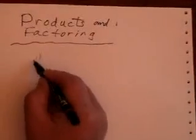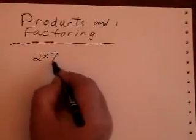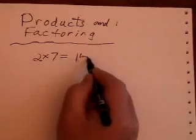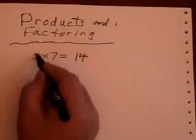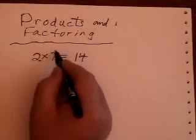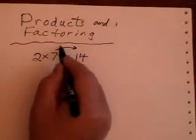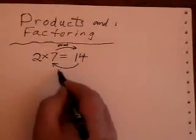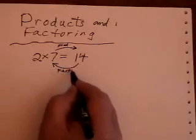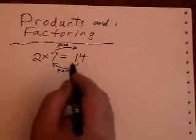What we're looking at here is what we call products and factoring. I'll show you how the two of them are intertwined. At the basic level, when you first saw factoring, you probably were taught that it was the opposite of multiplying. So we know that 2 times 7 is 14 — that's called a product going in that direction. And 14 is equal to 2 times 7 — that's called factoring. So they are opposites of each other.